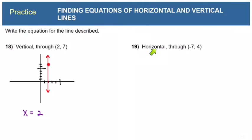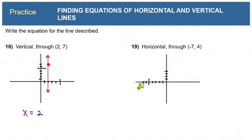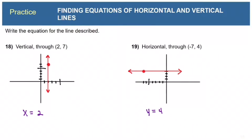Now let's write the equation of a horizontal line that goes through (negative 7, 4). I want a sketch — negative 7, 4 would be about here, and a horizontal line would go this way. When I look at that horizontal line, I can see that all of these points have the same y value, so I can write y equals 4.